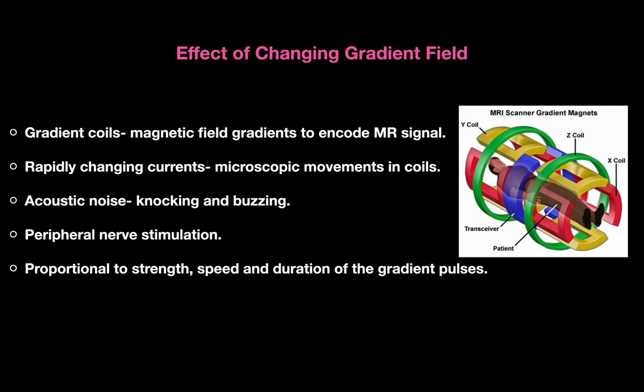The changing gradient field: gradient coils produce magnetic field gradients to encode MR signals using x, y, and z coils. Rapidly changing current inside these coils produces microscopic movement causing knocking and buzzing, which can cause peripheral nerve stimulation. This depends proportionally on the strength, speed, and duration of the gradient pulses. Activation of the gradient coils can cause noise leading to temporary hearing impairment, and in a few studies there is potential for permanent hearing impairment.